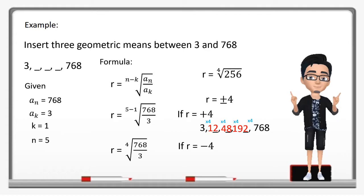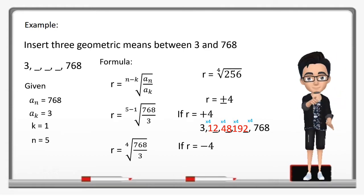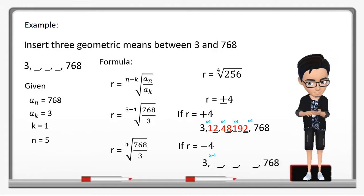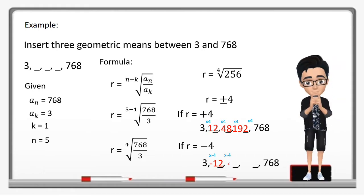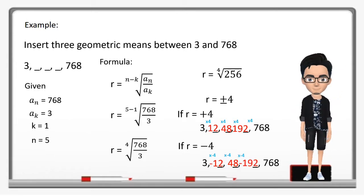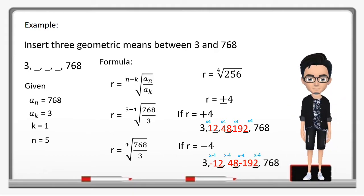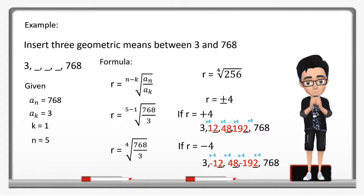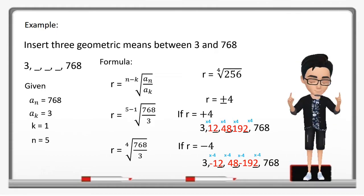If r is equal to negative 4, multiplying each preceding term by negative 4: 3 times negative 4 is negative 12, negative 12 times negative 4 is 48, 48 times negative 4 is negative 192, and negative 192 times negative 4 is 768. So in our example, the geometric means are 12, 48, 192 for r positive 4, or negative 12, 48, and negative 192 for r negative 4.